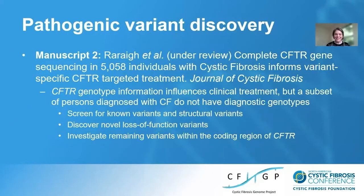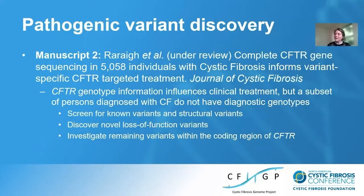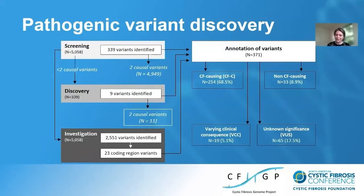The second vignette focuses on pathogenic variant discovery and a better understanding of variation within CFTR, summarized in Rauri et al., currently under review with the Journal of Cystic Fibrosis. CFTR genotype information is important because it influences clinical treatment of patients with CF, but there's a subset of patients who meet the clinical diagnosis of CF who do not have diagnostic genotypes. We wanted to see if we could solve that problem using whole genome sequence data.